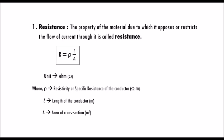The formula for resistance is given as R equals rho into L by A, where rho is the resistivity or specific resistance of the conductor in Ohm meter, L is the length of the conductor in meter, and A is the area of cross section in meter square.